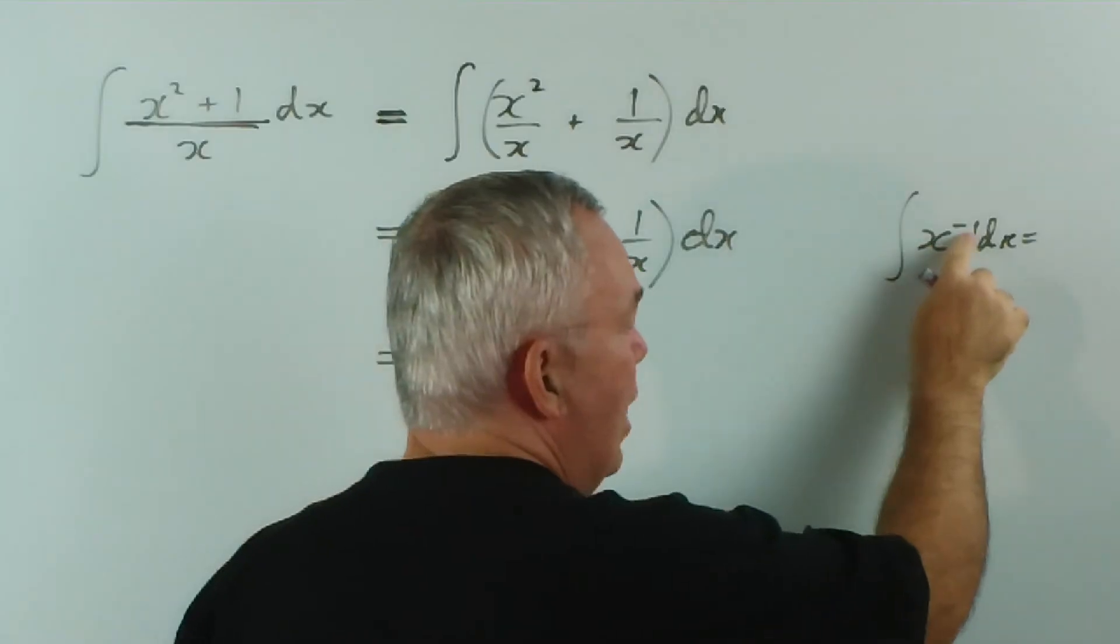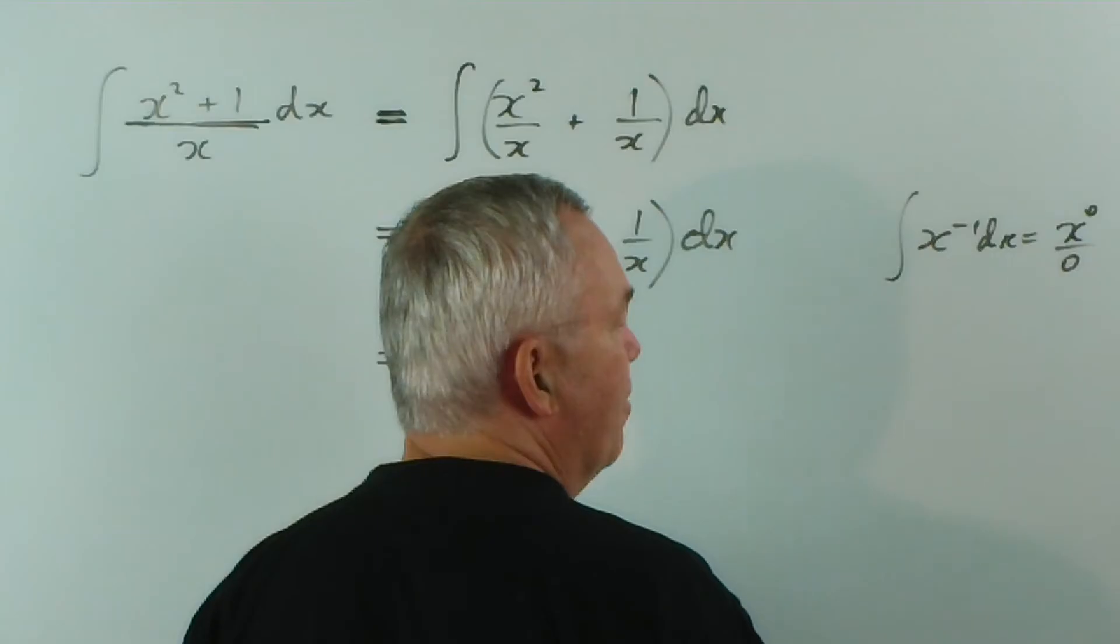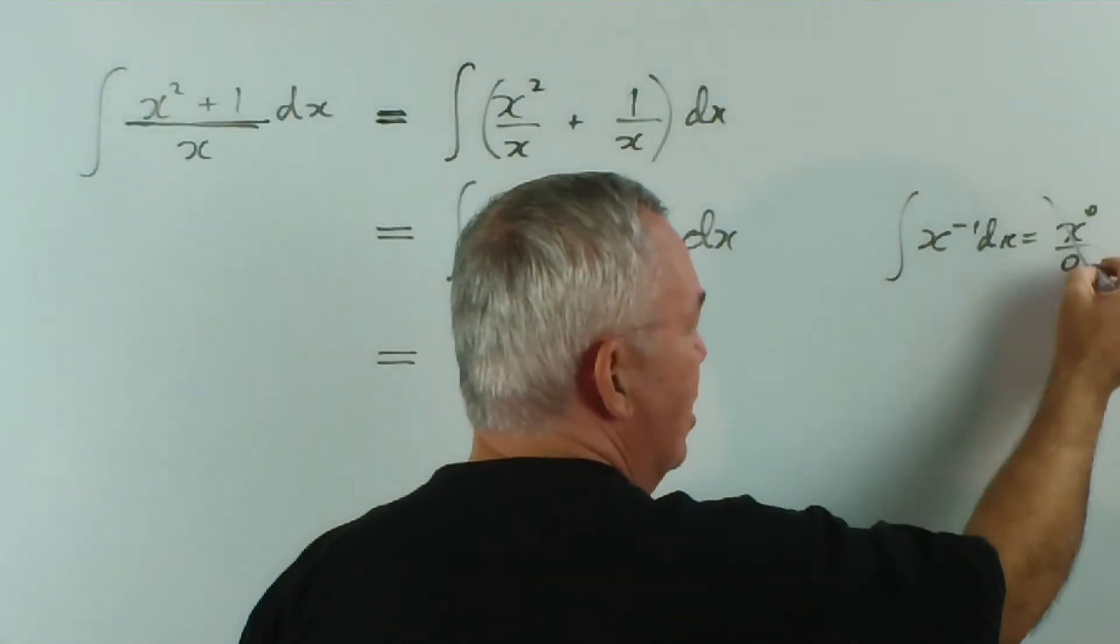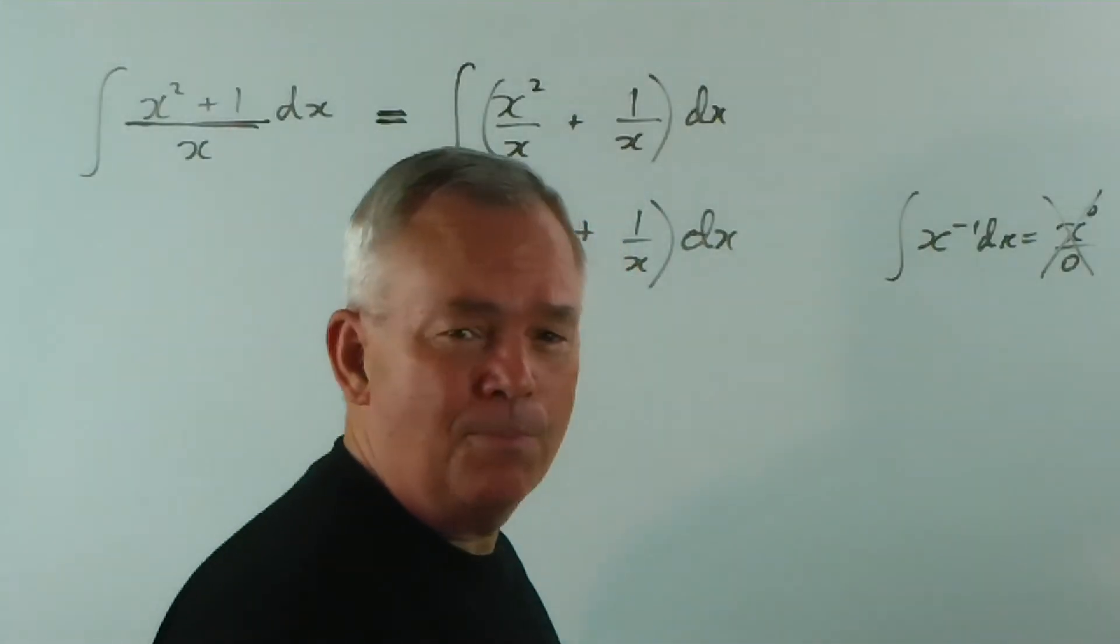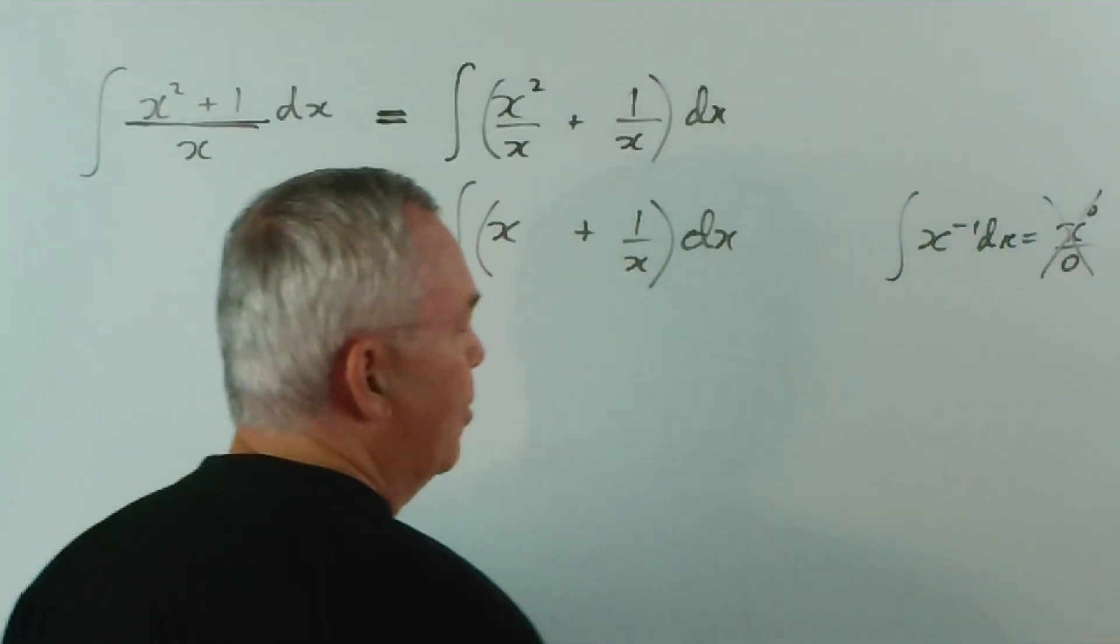We would have to add 1, and we would get x to the 0 over 0, because 1 more than minus 1 is 0. And this just is nonsensical. It makes no sense. It's undefined. So that is not a way forward for us.